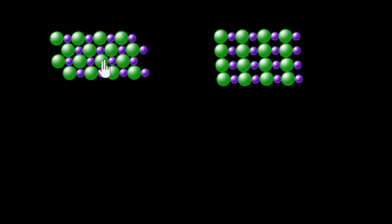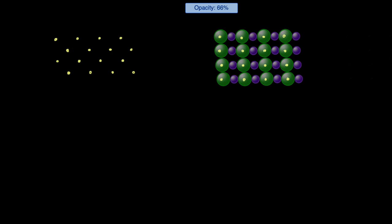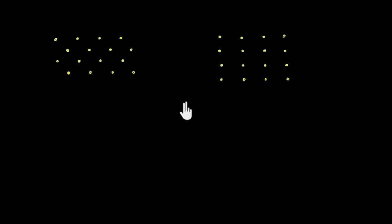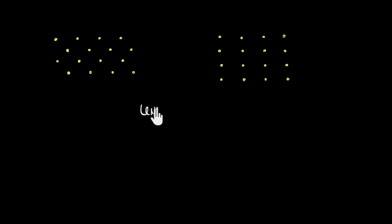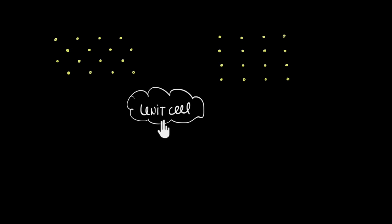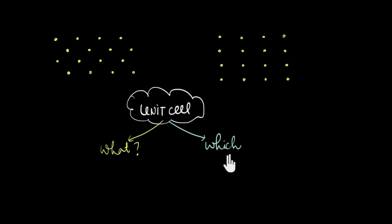In the last video, we saw that the underlying translational symmetry of a crystal can be represented using Bravais lattices. And because crystals can form different repeating patterns, we also have different corresponding Bravais lattices. Now in this video, we will try to put a name to these different Bravais lattices and different patterns, so that we can communicate about them more effectively. To do that, we think about the unit cell that makes up the lattice. So in this video, we are going to understand what a unit cell is and which unit cell should be chosen to describe a particular lattice.